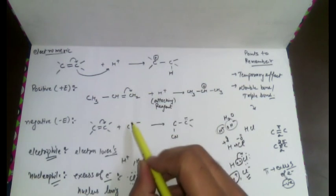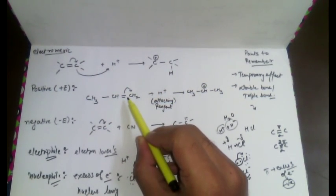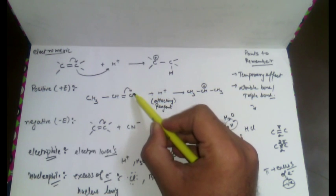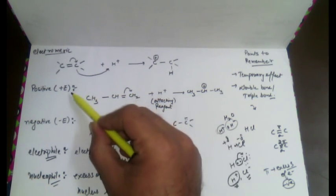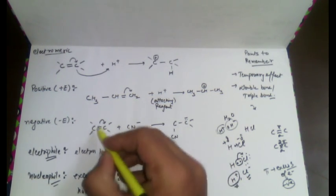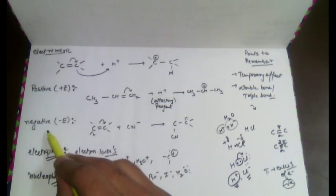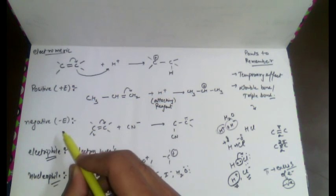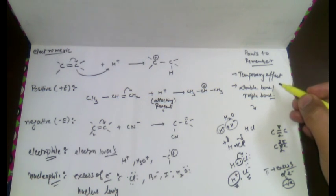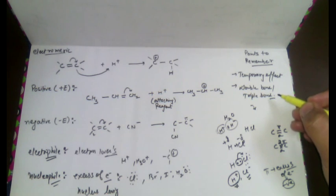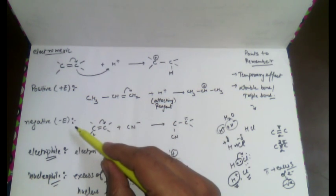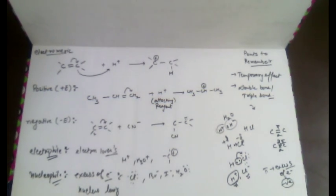If the attacking reagent attaches to the same atom to which the pi bond has shifted, we call it a positive electromeric effect. If the pi bond shifts in one direction and the attacking reagent attaches to the second carbon atom, we call it a negative electromeric effect. Points to remember: it is a temporary effect, a double or triple bond must be present, it is represented by a complete curved arrow, and it is of two types: +E and −E.